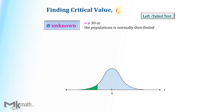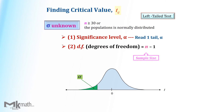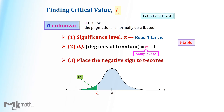Next, find the t-critical value for a left-tailed test. We need three steps to find it. Step 1: identify the significance level alpha as a one-tailed area. Step 2: find the degrees of freedom by subtracting one from the sample size, then look up the table. Step 3: place a negative sign on the t-score.